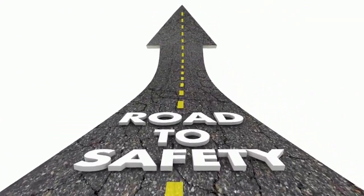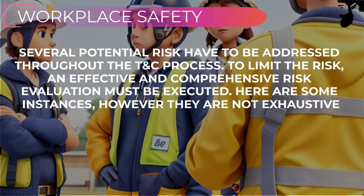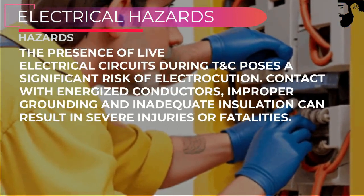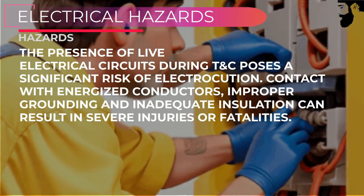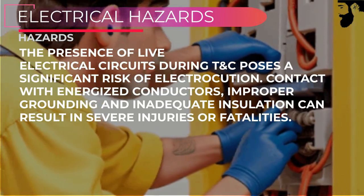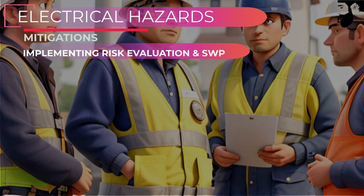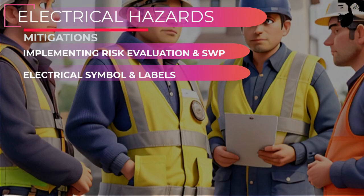Next, workplace safety. Several potential risks have to be addressed throughout testing and commissioning processes. To limit the risk, an effective and comprehensive risk evaluation must be executed. First and foremost, electrical hazards. The presence of live electrical circuits during testing and commissioning poses a significant risk of electric shock and electrocution. Contact with energized conductors, improper grounding, and inadequate insulation can result in severe injuries or fatalities. Implementing risk evaluation and safe work procedures to manage hazards, as well as understanding common electrical symbols and labels, are some of the control risk reduction techniques.